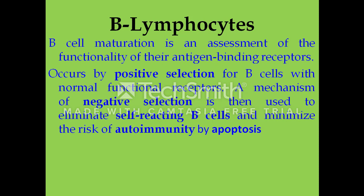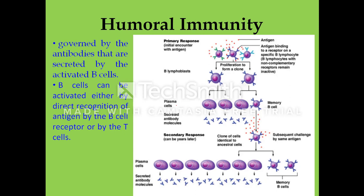The immature B cells that pass selection in the bone marrow then travel to the spleen for their final stages of maturation. There they become naïve mature B cells with specificity towards their complementary antigen.